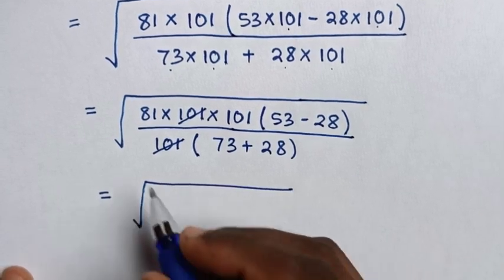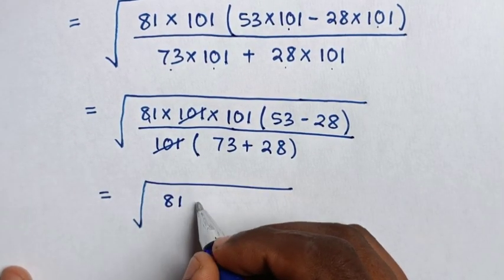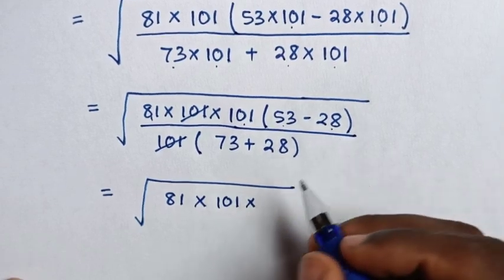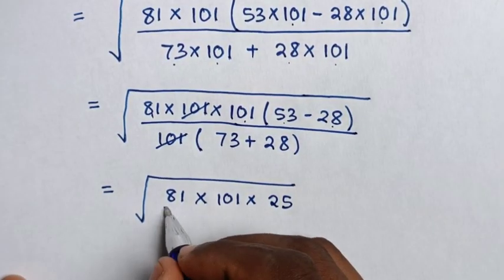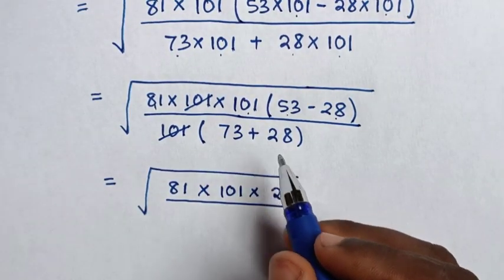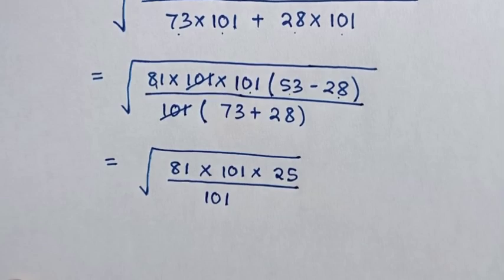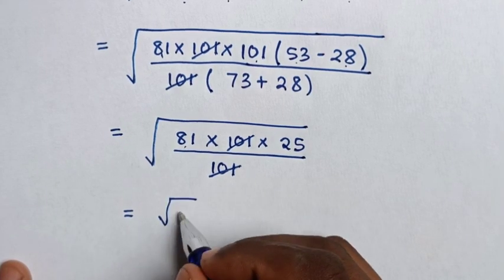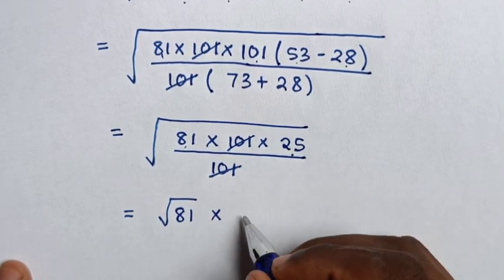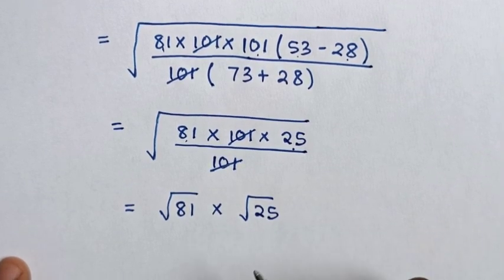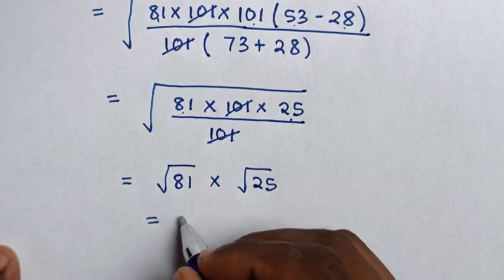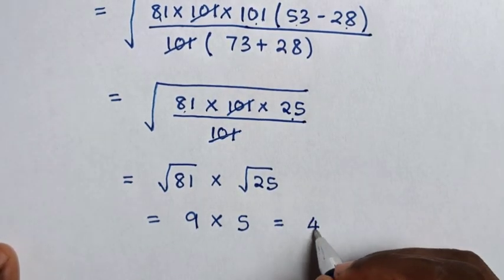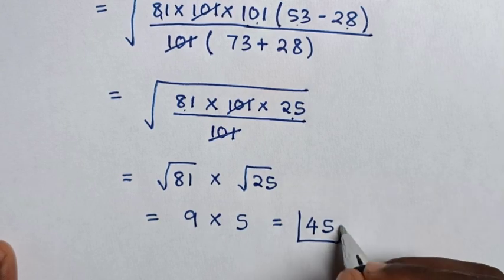So it will be equal to square root of 81, then times 101, then times (53 minus 28) is 25, over (73 plus 28) which is 101. Simplifying, the 101 cancels, giving square root of 81 times 25. Square root of 81 is 9, times square root of 25 is 5, so 9 times 5 equals 45. That is our final answer.